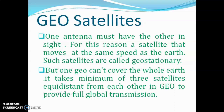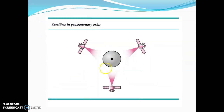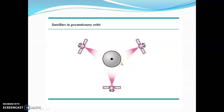With three GEO satellites placed at equal distances around the earth, we can achieve global transmission coverage. The antenna needs line of sight to communicate with the satellite. With three satellites placed equidistantly and their antennas covering adjacent satellites, communication can reach the whole earth. So three GEO satellites in this configuration can cover the entire earth orbit and enable global communication.